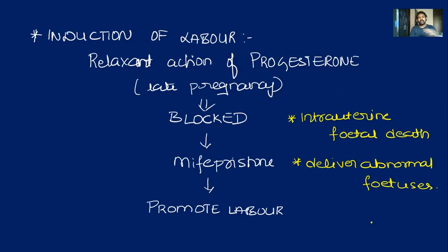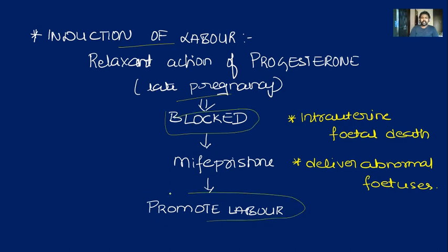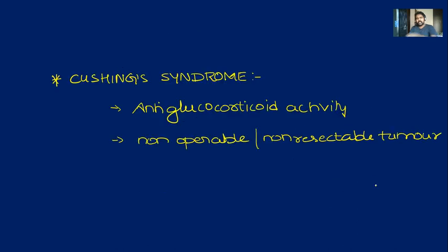During the later luteal phase, it dislodges the embryo, which is passed through menstruation. For induction of labor, mifepristone blocks the relaxant effect of progesterone in the later half of pregnancy, thereby promoting labor. It is mainly indicated for induction in cases of intrauterine fetal death and delivery of abnormal fetuses. It can also be used in Cushing's syndrome due to its anti-glucocorticoid activity, mainly for non-operable or non-resectable tumors.